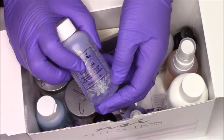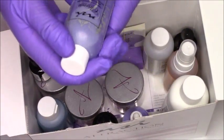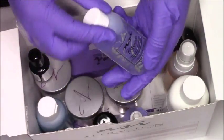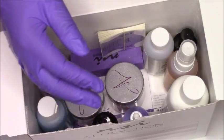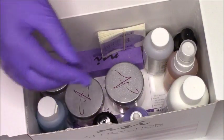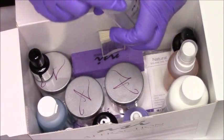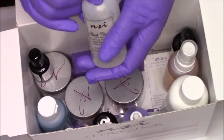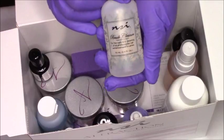2.4 flow ounce of NSI cleanse. This here I guess is supposed to take off the tacky layer when you do your gels or whatever. Now y'all heard what I said, 2.4 flow, four flow ounce.